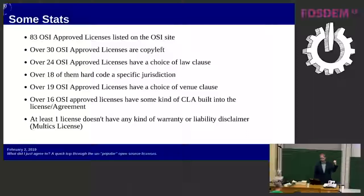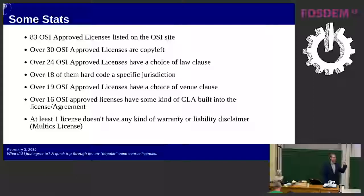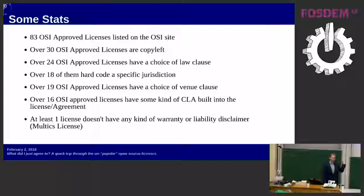Over 18 of those licenses have a hard-coded specific jurisdiction, and 19 have a choice of venue — meaning the court where you'd have to bring any cause of action. You might find that even though you've never been to Colorado or the United States, if you want to sue to enforce the Reciprocal Public License, you'd have to bring that lawsuit in Colorado. So if you're suing the person down the street from you in Belgium, you've both mutually agreed the only courts you can use are Colorado courts. That's a little strange.